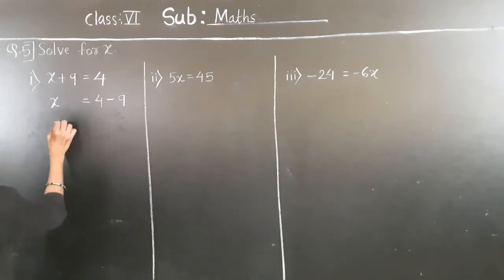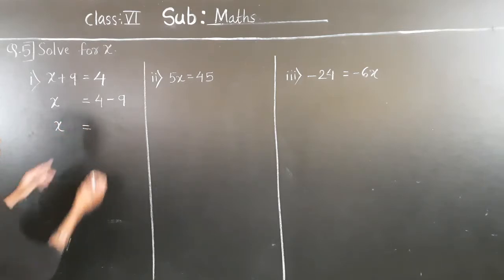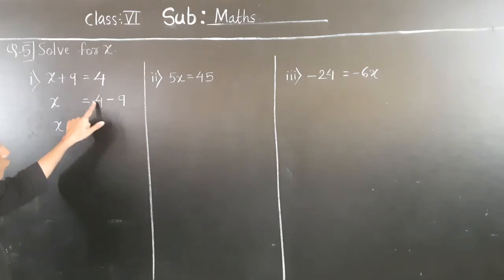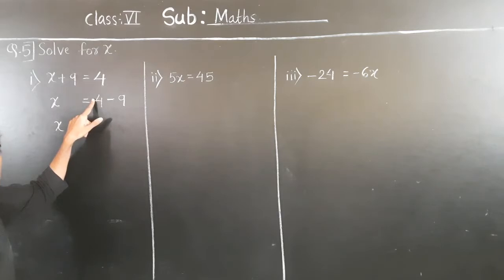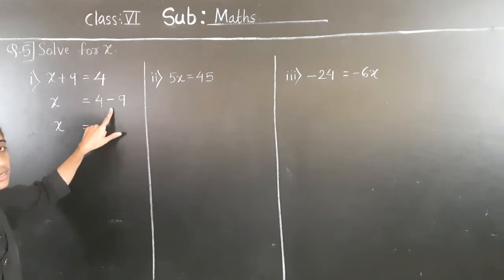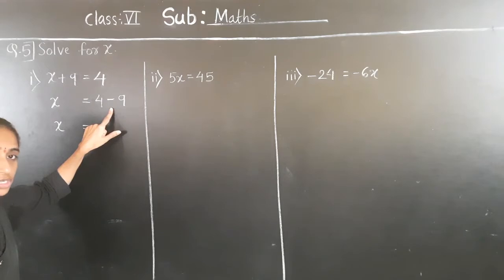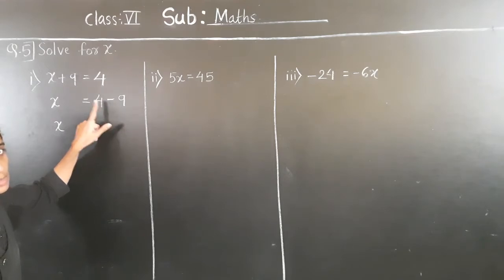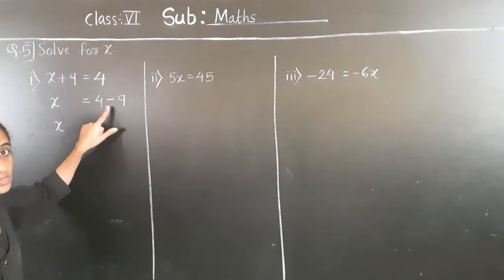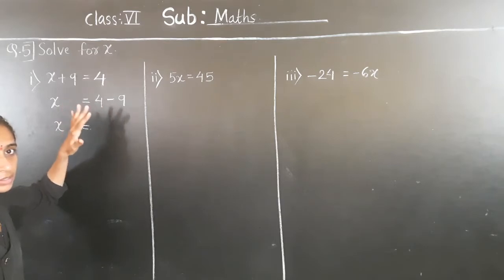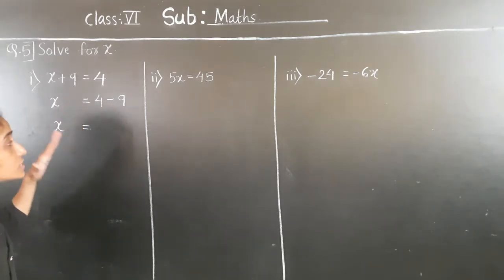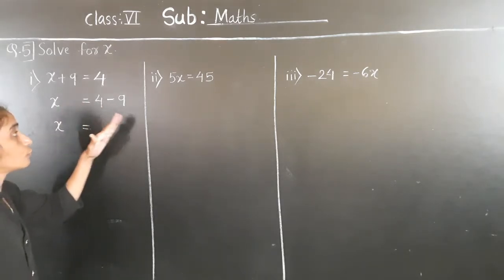So now x is equal to: now 4 — for 4 here there is no sign, it is plus. So plus 4 minus 9. Using integer rules: plus and minus gives minus. So subtract 4 from 9 — if we subtract 4 from 9, what will it be?